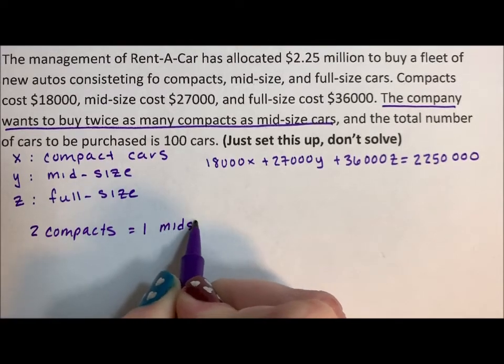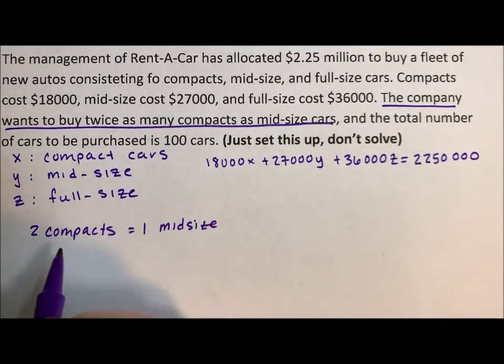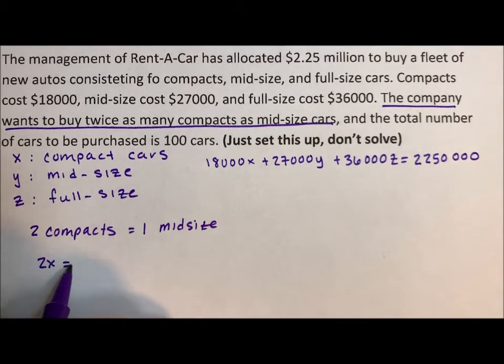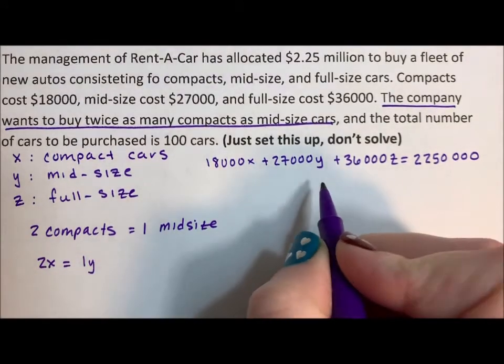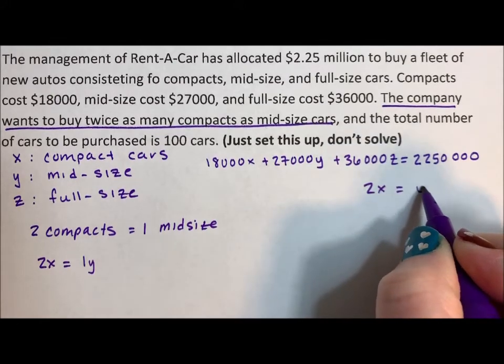Right? So twice as many compacts as midsize. So two X is equal to one Y. So that's our next equation. Two X equals Y.